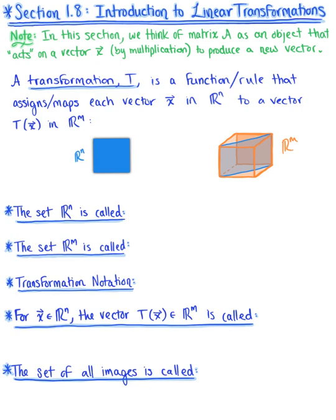Here in section 1.8, I am very excited to introduce you to linear transformations. In this section, we are going to shift our point of view and think about matrix A as an object that's going to act on a vector x by multiplication to produce a new vector, matrix A times vector x. And this is what defines a transformation.